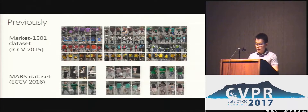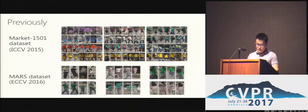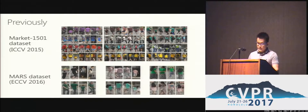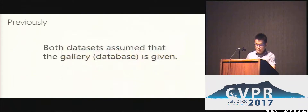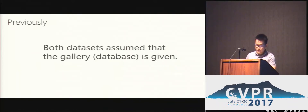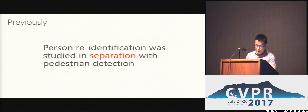Here are some samples of our datasets. However, both datasets assume that the gallery is given, but in practice the gallery usually varies when different pedestrian detectors are applied. Although it's well-known that person re-ID is closely related to pedestrian detection, the two tasks have been separately studied. Therefore, much needs to be known about how person re-ID and pedestrian detection affect each other.